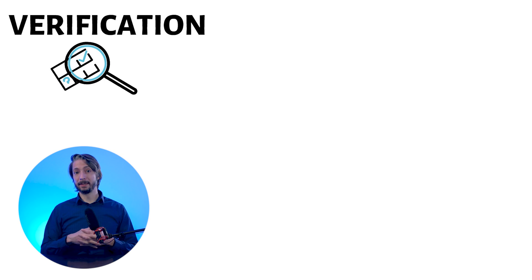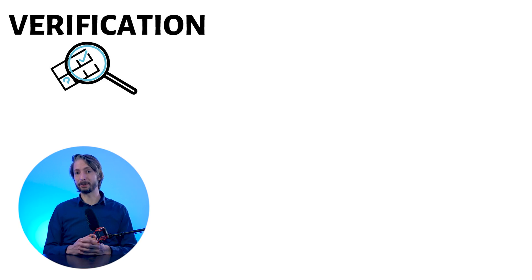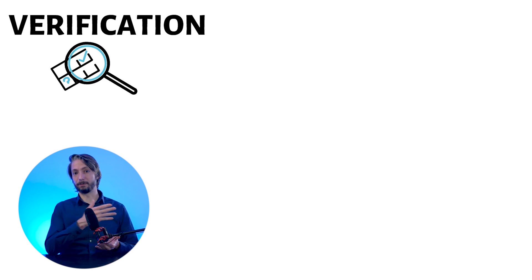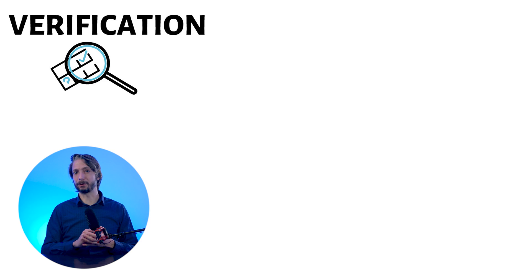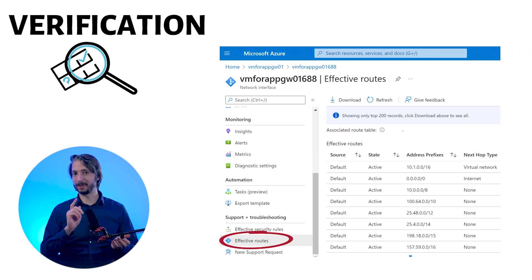Now, verification. The combination of routes you create, the Azure default routes, and any propagated routes from your on-premises network through an Azure VPN gateway — or via BGP if your virtual network is connected to your on-premises network — are the effective routes for all network interfaces in a subnet. You can see these effective routes by navigating to a NIC either via the portal, PowerShell, or CLI.